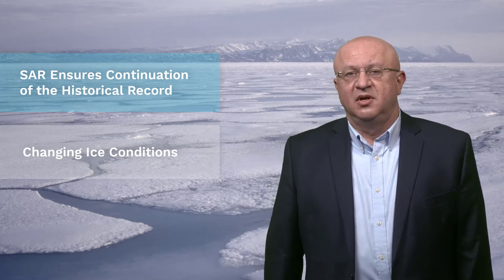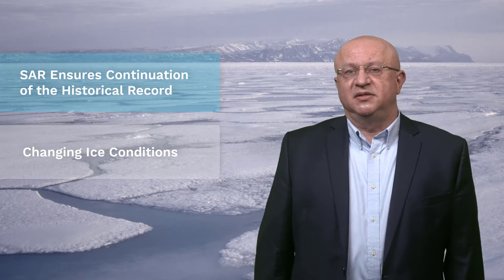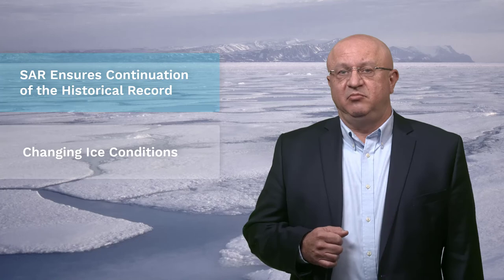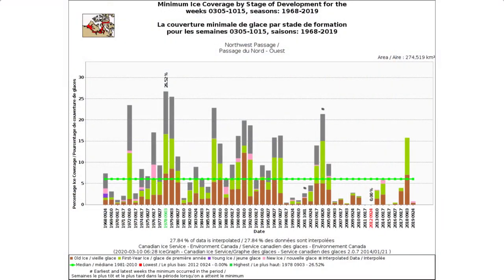Ice conditions are changing rapidly, and SAR provides a historical record and a way to monitor ongoing changes. It used to be that a complete transit of the Northwest Passage was rare due to the difficult ice conditions. But now, since about 2006, cruise ships, pleasure craft, and even commercial vessels regularly make transits of the Passage in the summer months. The reason for this is a change in ice conditions, meaning lower concentrations that permit vessels to transit with ease during the summer. This does not mean that every year is easy, but it does mean that there are more, easier years.